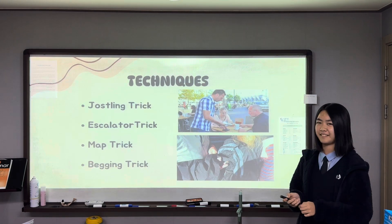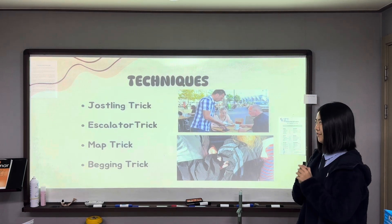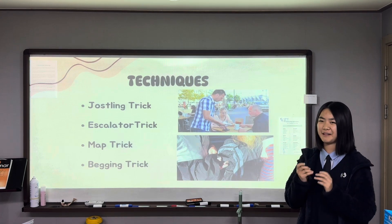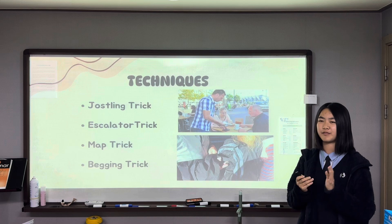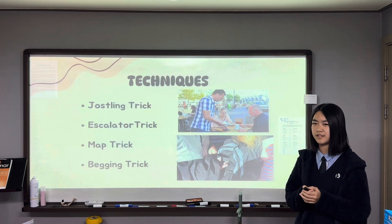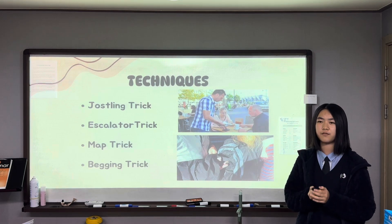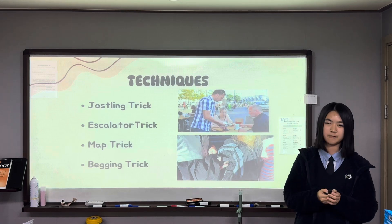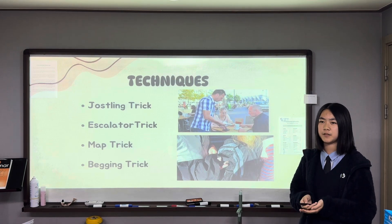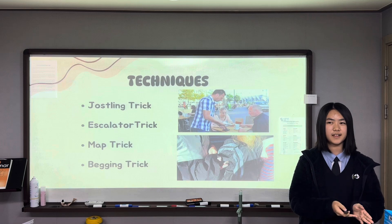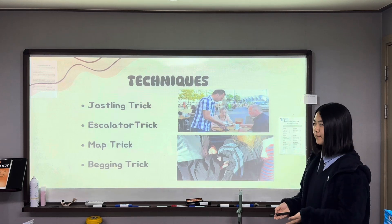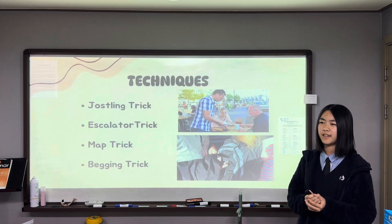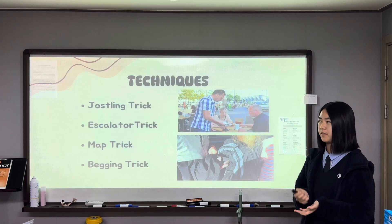And next, the techniques. There are a lot of techniques, but I brought four of them. First, the jostling trick: one or more pickpockets push the victim into a crowd, and when the victim is distracted, they steal from behind. Second, the escalator trick: the pickpocket stands behind the victim and an accomplice stands in front of them. When they reach the end, the accomplice suddenly stops and the pickpocket steals from behind.